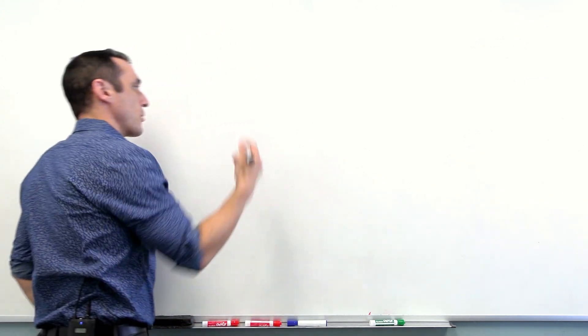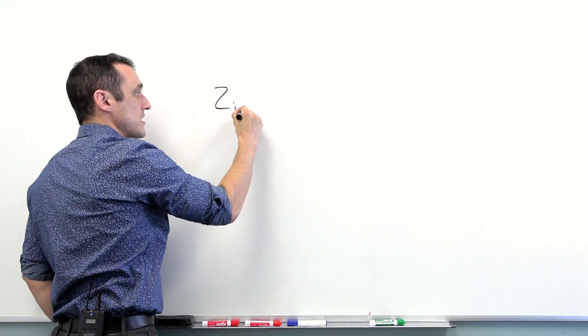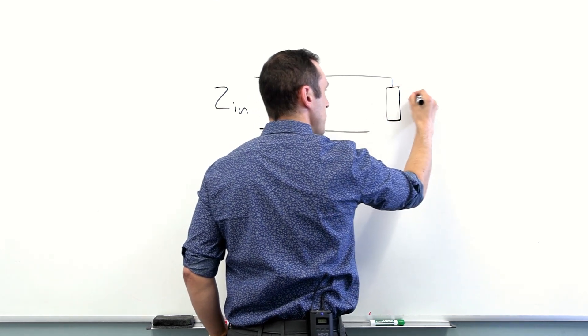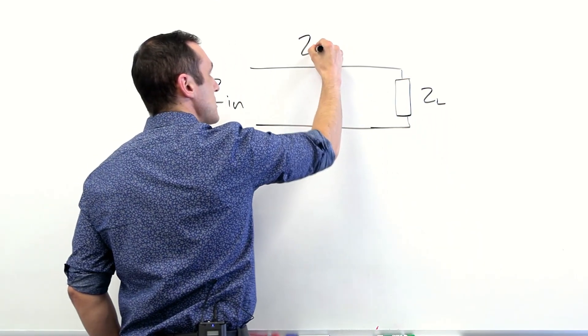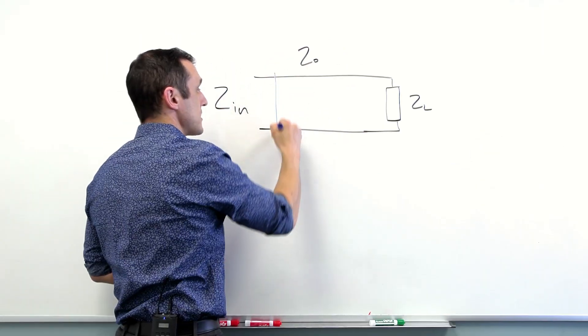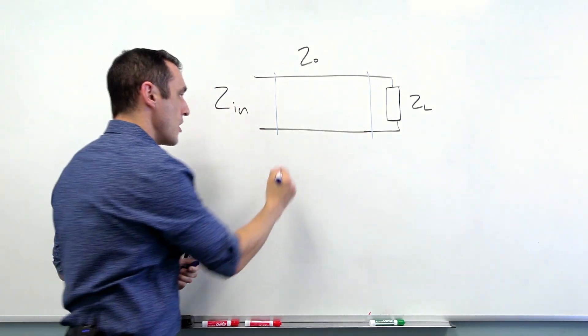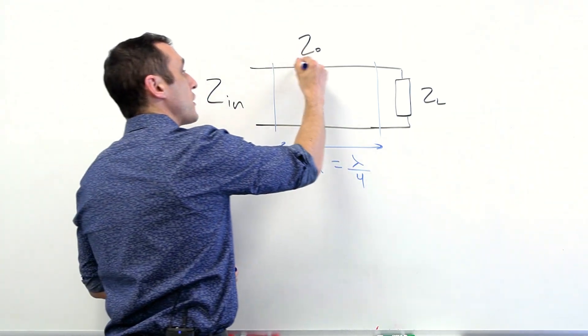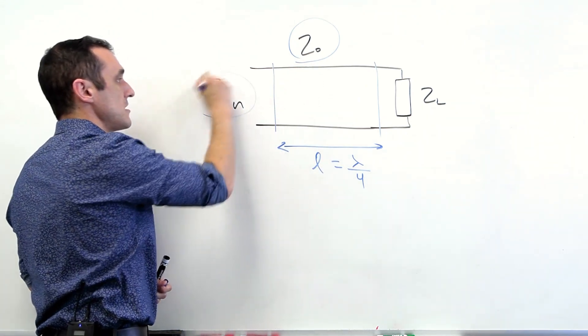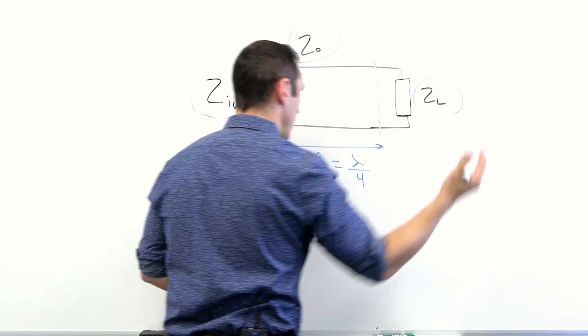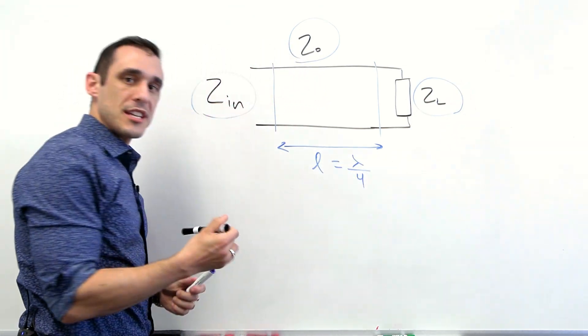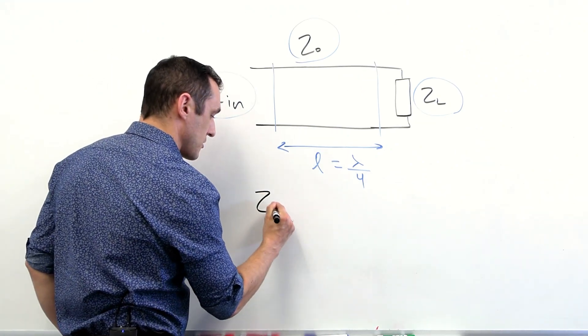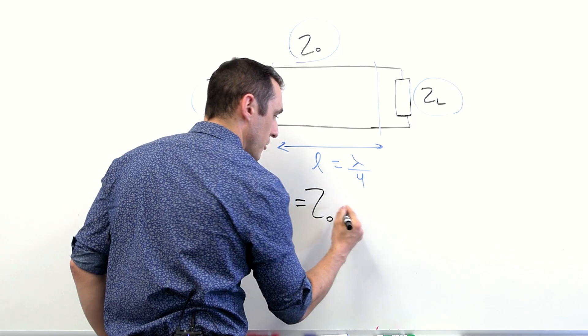So first, let's look at the properties of a quarter wavelength transmission line. If this is my input impedance looking into a transmission line and I have a known load impedance Z sub L, what does Z sub zero, the characteristic impedance of this section of my transmission line with a length L equal to lambda over four need to be. We want to figure out what this needs to be in order to hit a target Z sub N given a Z sub L value. To do this, we have to go back to the input impedance equation from transmission line theory.